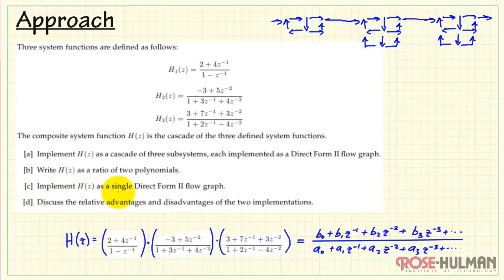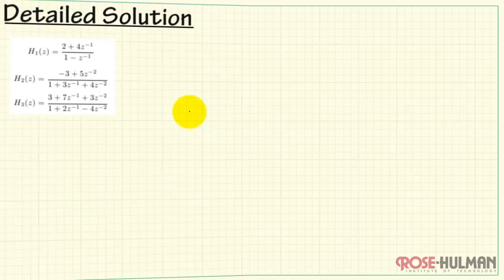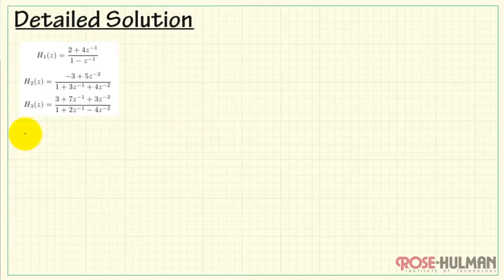In part C, we want to implement this overall system function as a single direct form to FlowGraph. We identify the highest-order denominator term and simply put down delay elements accordingly. Generally, it will look like a structure that just gets longer in the vertical direction. Let's move on to the detail solution for part A.